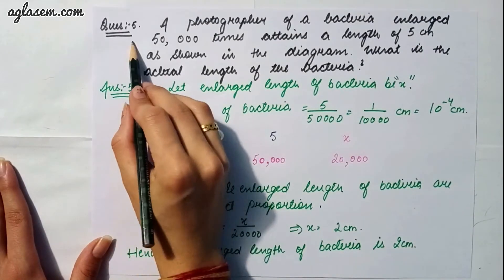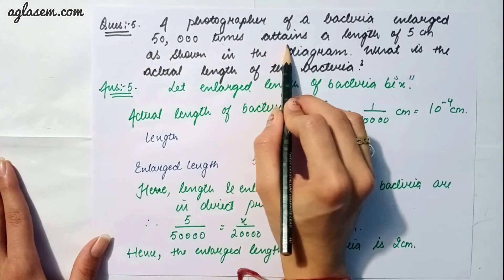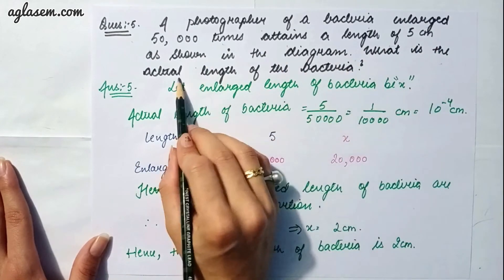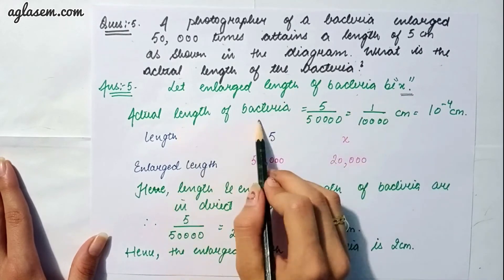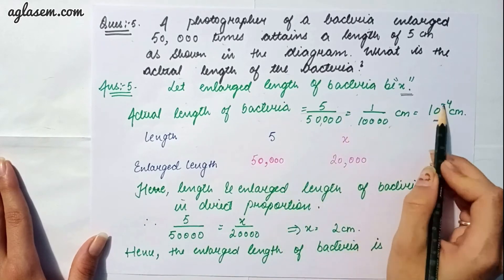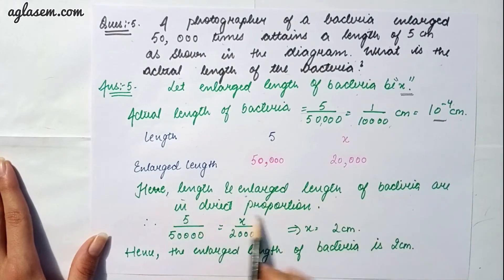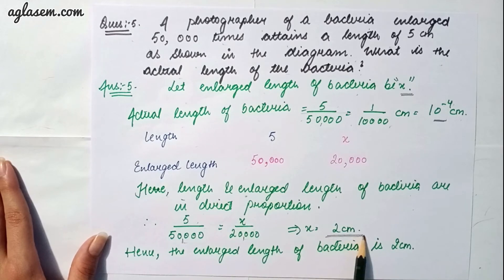Question 5: A photograph of bacteria enlarged 50,000 times attains a length of 5 cm. What is the actual length of the bacteria? The actual length is 5 ÷ 50,000 = 10⁻⁴ cm. Also, using direct proportion: 5/50,000 = x/20,000, which gives x = 2 cm. So the enlarged length of bacteria is 2 cm.